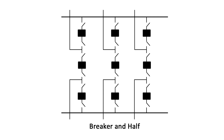Breaker and a half. When expansion of the substation is required to accommodate more circuits, the ring bus scheme can easily be expanded to the one-and-a-half breaker configuration. This configuration uses two main buses, both of which are normally energized.